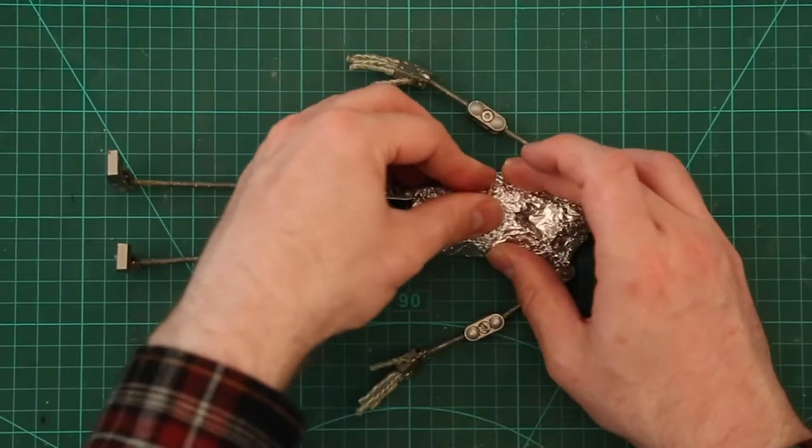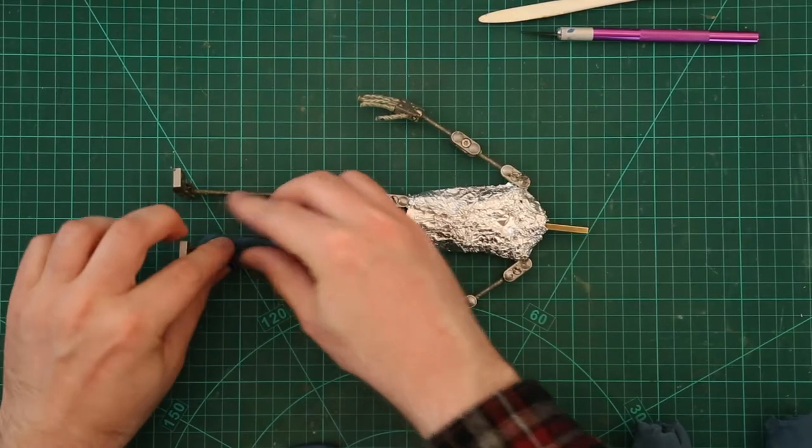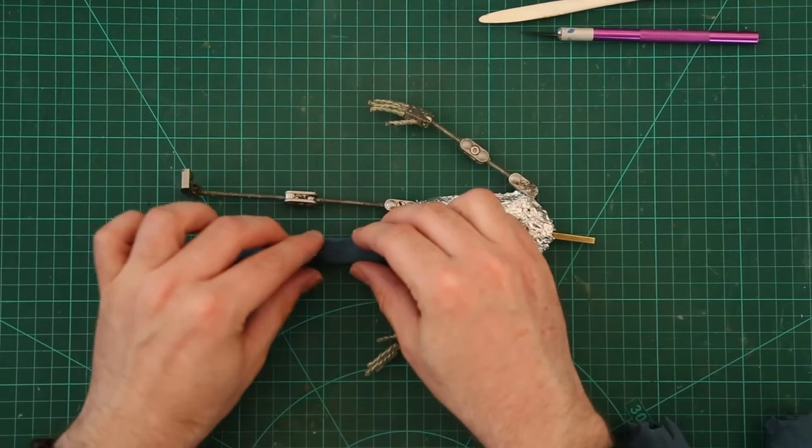As always, just bulking out the character with a bit of tin foil just to save on weight and plasticine, then starting to flesh out the character.